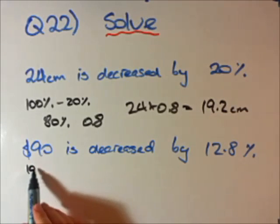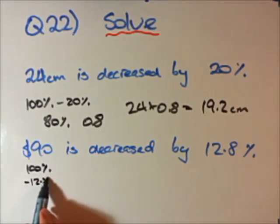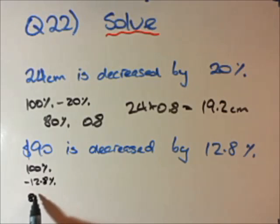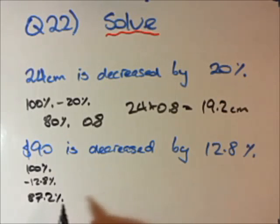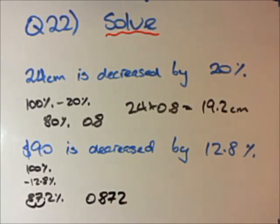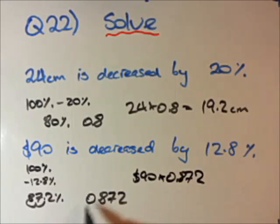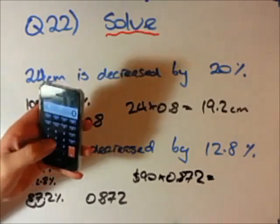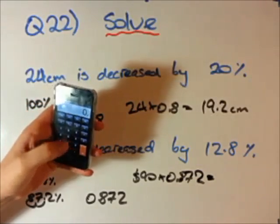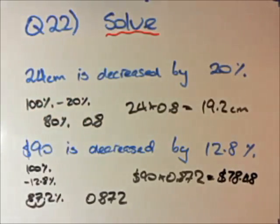Same process for $90 decreased by 12.8%. Starting at 100%, minus 12.8% leaves 87.2%. Converting to a decimal by moving the decimal point two to the left gives 0.872. We then multiply our original $90 by 0.872. Using the calculator: 90 multiplied by 0.872 equals $78.48. That's how we decrease an original value by a certain percentage.